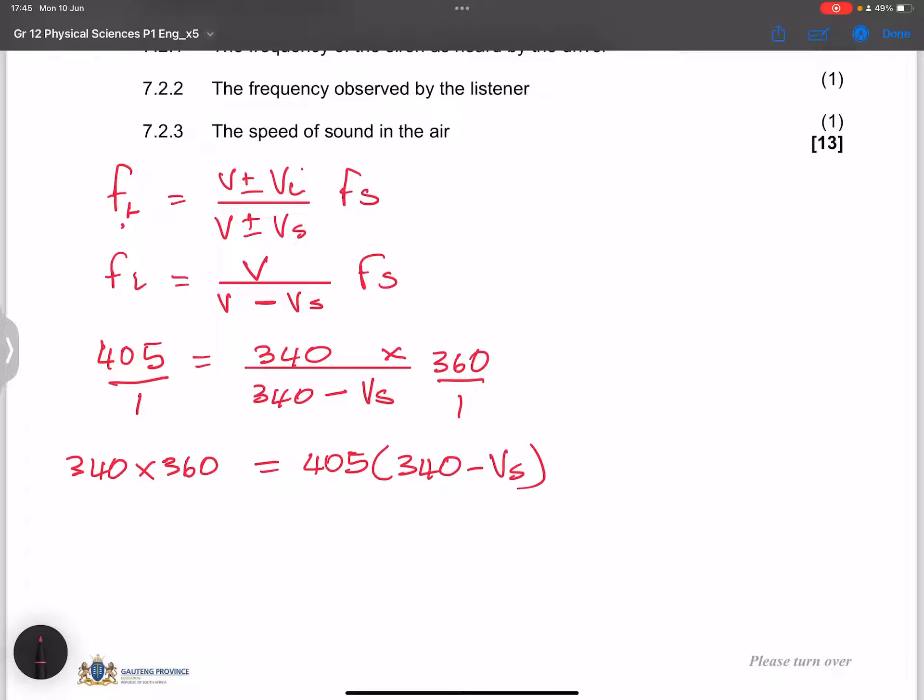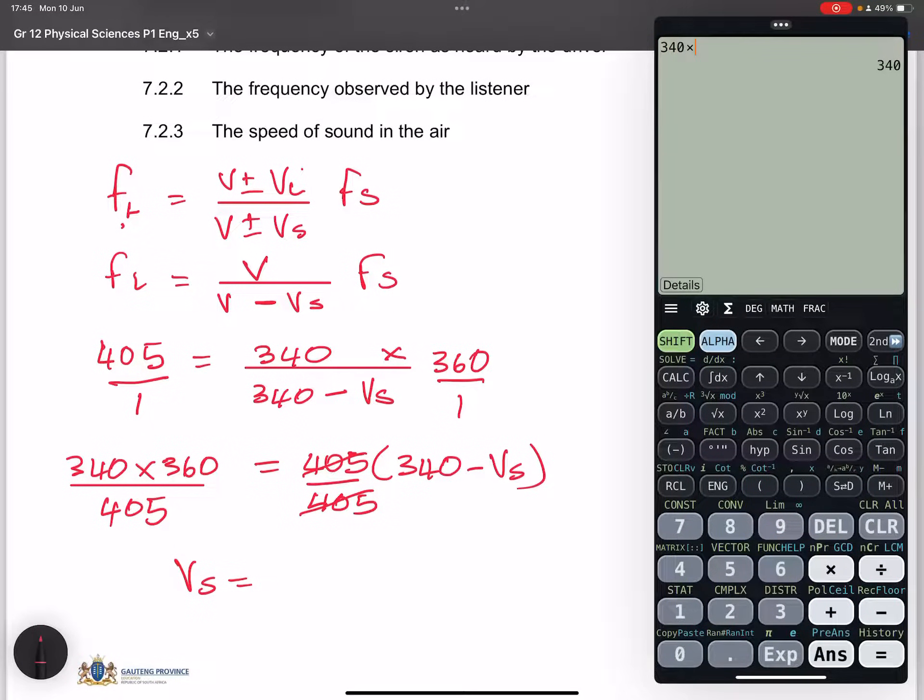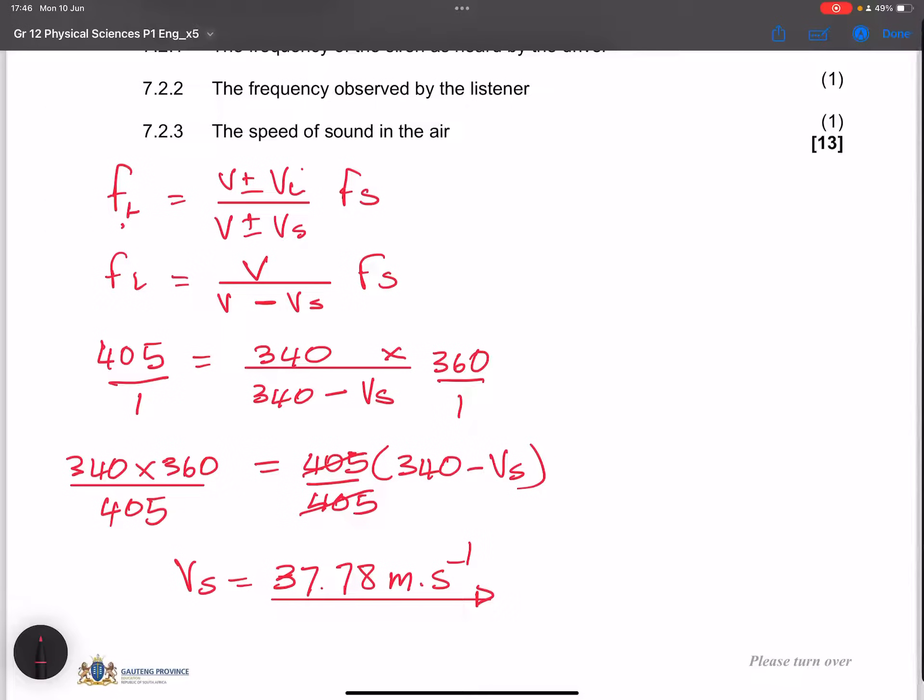So that makes it easier. If I divide by 405, and I am going to subtract 340. So that cancels with that. So let's find out what Vs would be. So we've got 340 times 360 divided by 405, that gives me 302. And I'm going to subtract from there 340. I get negative 37. But remember, in this case, I would have had minus Vs is that. So Vs would be equal to 37.78 meters per second. Please just verify that and make sure that you get to the same value.